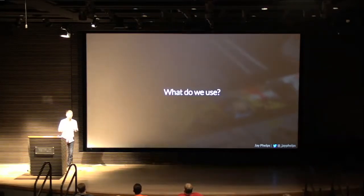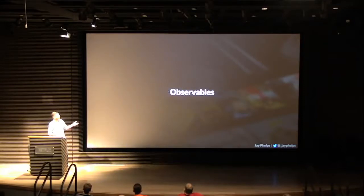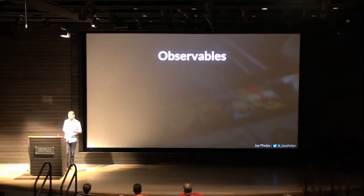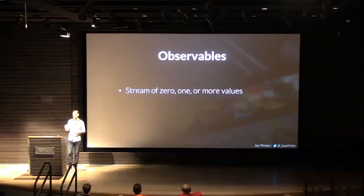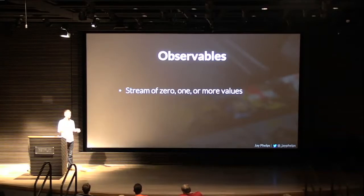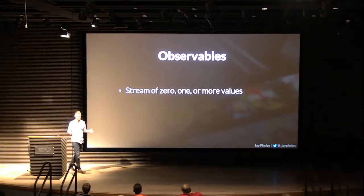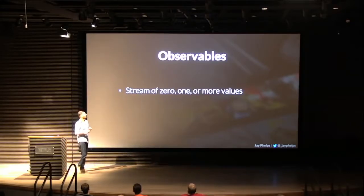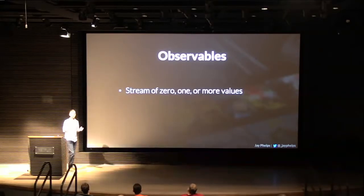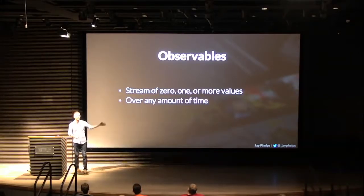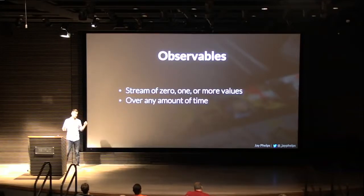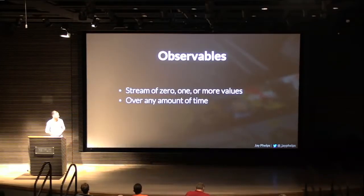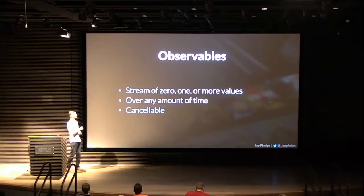So what do we use to solve this problem? Observables. An observable is a stream of zero, one, or more values. Zero meaning you could literally have no value, it just completes. You can have one value, just like a promise, or more values over a series of time. That new dimension — over time — is what's really important about observables compared to promises. It's a stream of things happening. And we get the cancellation that we were really looking for.